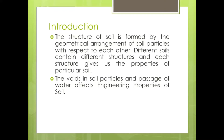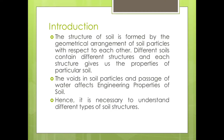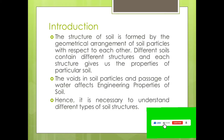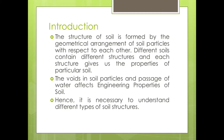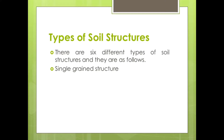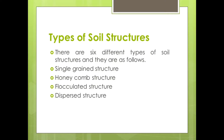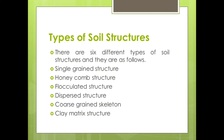Since air and water pass through the voids, it is going to affect the engineering properties of soil. In order to study these engineering properties, we need to understand the different types of soil structures. There are five to six different soil structures: first is single grain structure, second is honeycomb structure, third is flocculated structure, then dispersed structure, then coarse grained skeleton, and last is clay matrix structure.